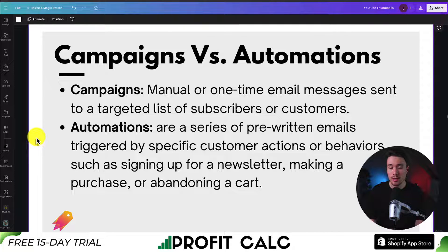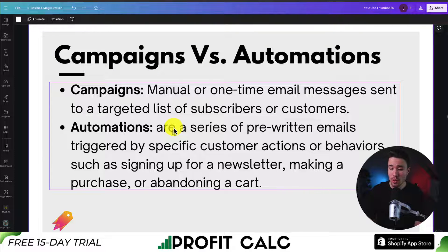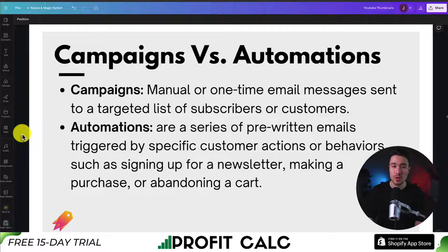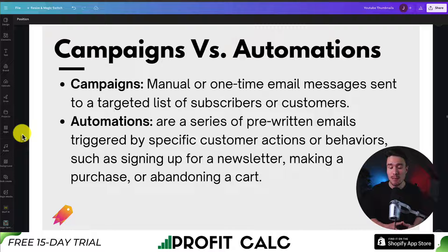For automations, once you've written the email and set up when it should be sent, you don't schedule anything manually. Automations are a series of pre-written emails triggered by specific customer actions or behaviors, such as signing up for a newsletter, making a purchase, or abandoning a cart. For example, if a customer abandons their cart, the automation waits four hours and then sends an email asking them to come back and complete their purchase.